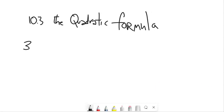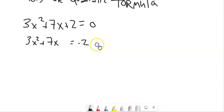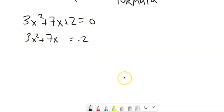So let's start with something like this. What I'm going to do is I'm just going to solve this by completing the square. Notice what I would do is I would subtract 2 to get it over here.